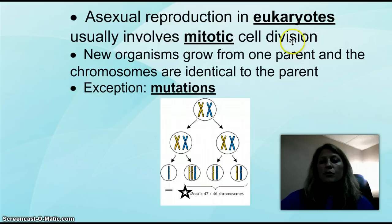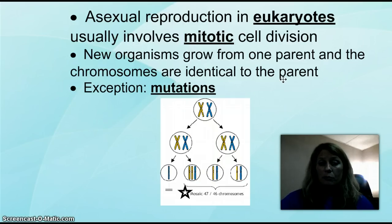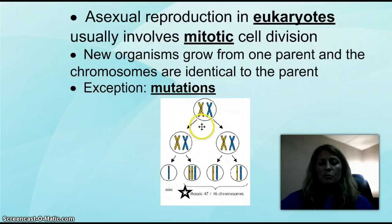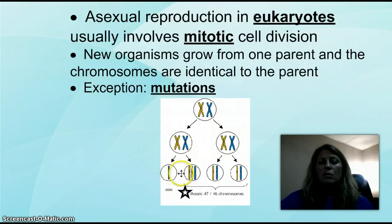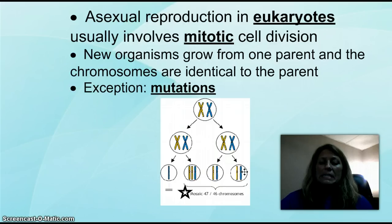In eukaryotes, asexual reproduction is going to involve mitotic cell division. The new organisms grow from one parent and are always identical to the parent — that's what makes asexual reproduction different from sexual reproduction. There are always some exceptions, and it happens when there is a mutation. Usually when it goes through mitosis, the chromosomes will divide. But something called non-disjunction — which we'll cover later — basically means those chromosomes do not divide or split equally.